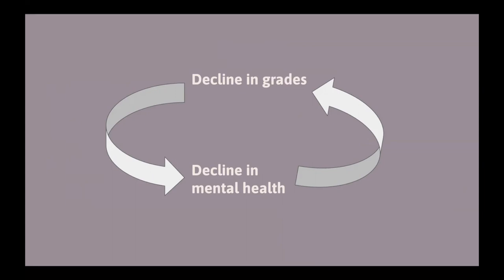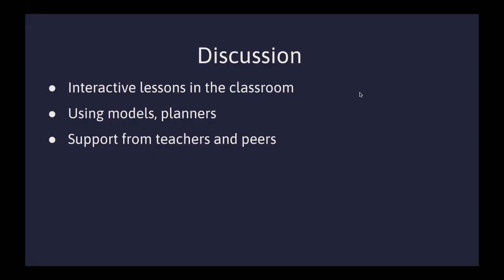So, how can we fix this? How do we improve the learning environment for students? Teachers can start by using more interactive lessons. They can use models, corners, and a structured task order. It is imperative that we get support from teachers and other students to support their peers in the classroom. Further research could explore how therapy, medications, and mindfulness practices may aid students in learning.